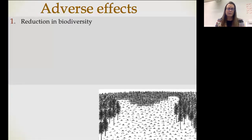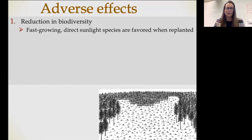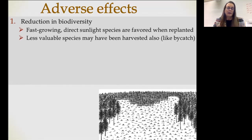Some of the adverse effects: mostly environmentally, there is a reduction in biodiversity. Especially if it's replanted with one particular species, you're not going to have the variety of primary producers, which means you're not going to have a variety of consumers either. Fast growing, direct sunlight species are going to be favored when it's replanted. Another adverse effect is that a lot of the species that may have been harvested might not have been usable — just like bycatch when we talk about fishing using nets.